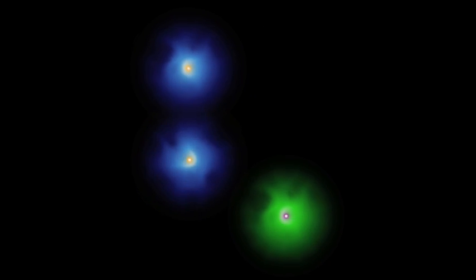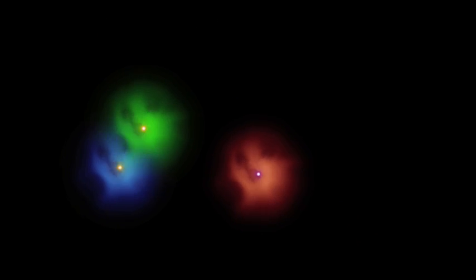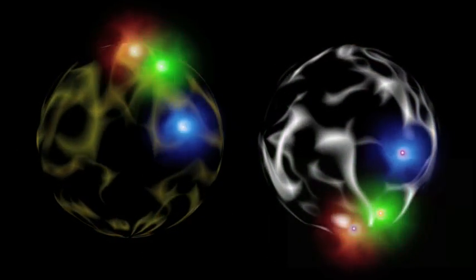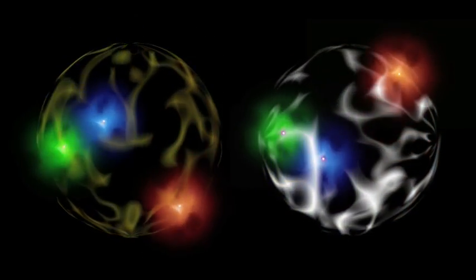A proton is formed from two up quarks and one down quark. While its slightly heavier cousin, the neutron, is formed from two down quarks and one up quark.